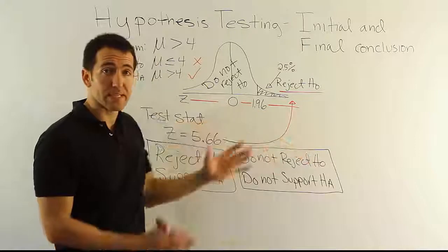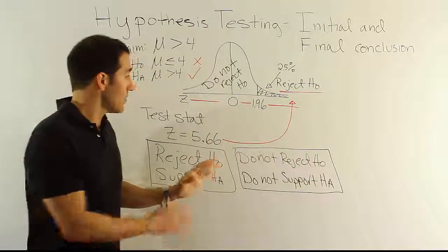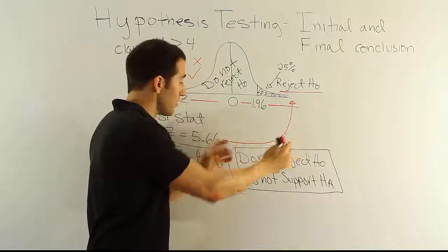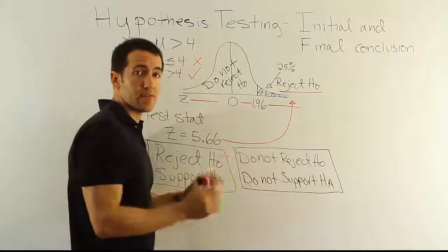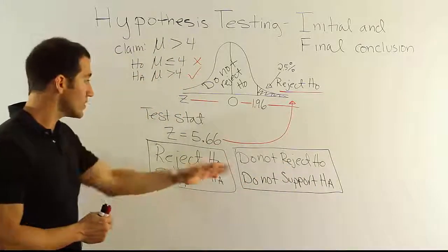Because saying you do not reject H0 is basically leaving it alone, right? If you leave it alone, then we're going to allow that to be true, and we're not going to support HA in favor of H0. There's only two possibilities.